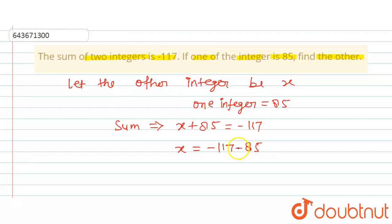So here we will get -117, and this is a negative, and this is also a negative, so addition will take place but the sign will be negative. Okay, so we will add 117 plus 85, so this is 202. So that means the other integer will be -202. The other integer equals -202. So this is the answer for this question. Thank you.